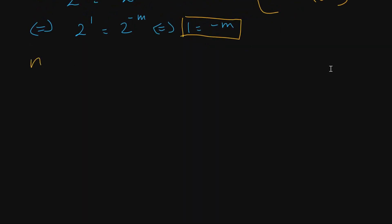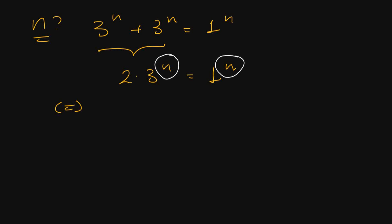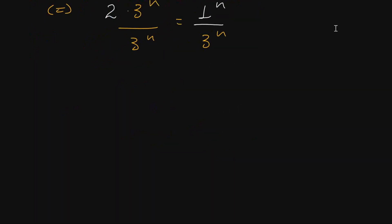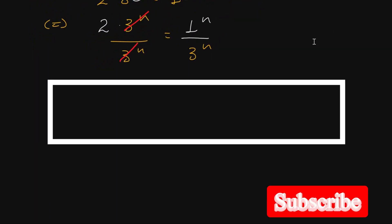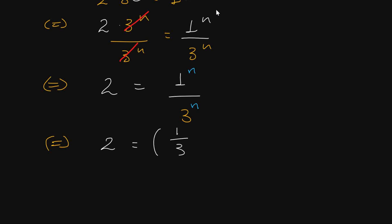Now let's find the n value. The equation is: there is a power of n plus there is a power of n equal to 1 to the power of n. These two expressions are the same, so this is 2 times there is a power of n, which equals 1 to the power of n divided by the same number. The left side is 3 to the power of n divided by 3 to the power of n. By cancellation, the left side becomes 2 and the right side is 1 to the power of n divided by 3 to the power of n, which equals 1 over 3 to the power of n. By exponent rule, 1 over 3 equals 3 to the power of minus one, so the right side is 3 to the power of minus n.